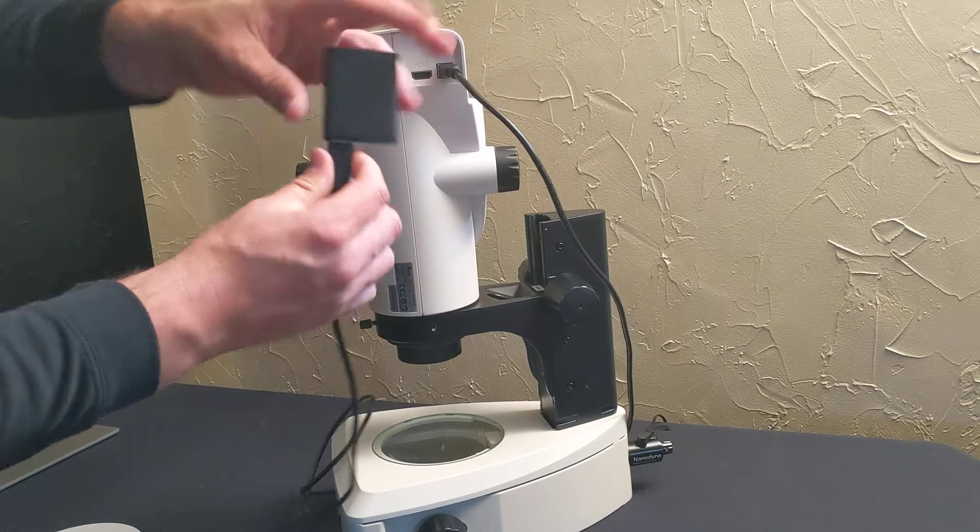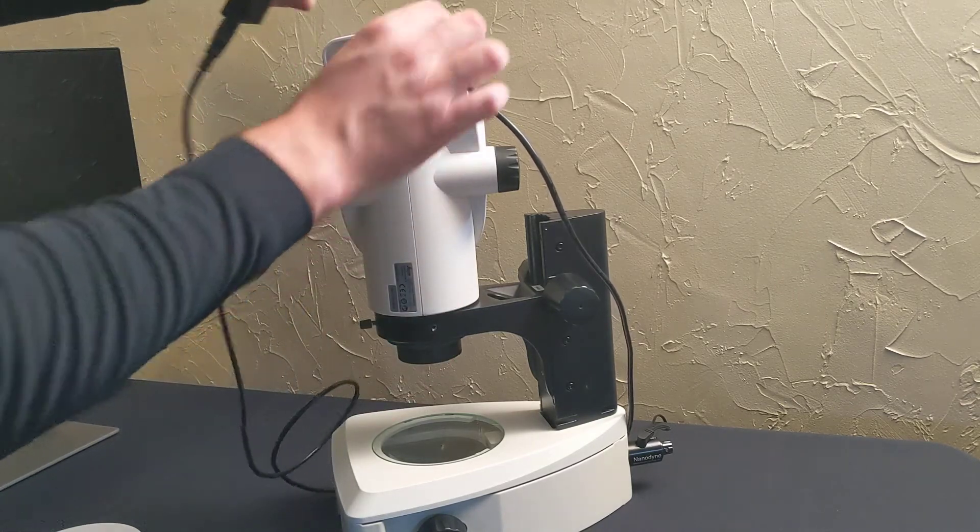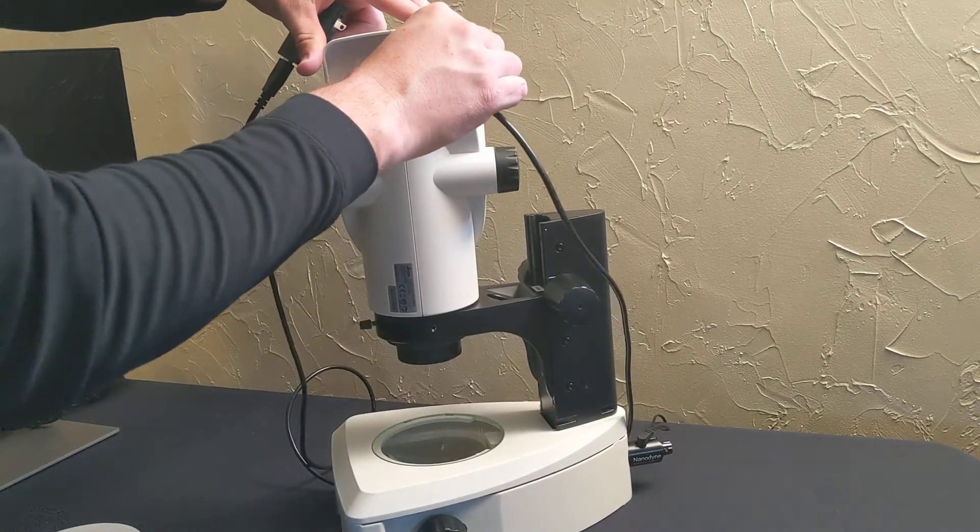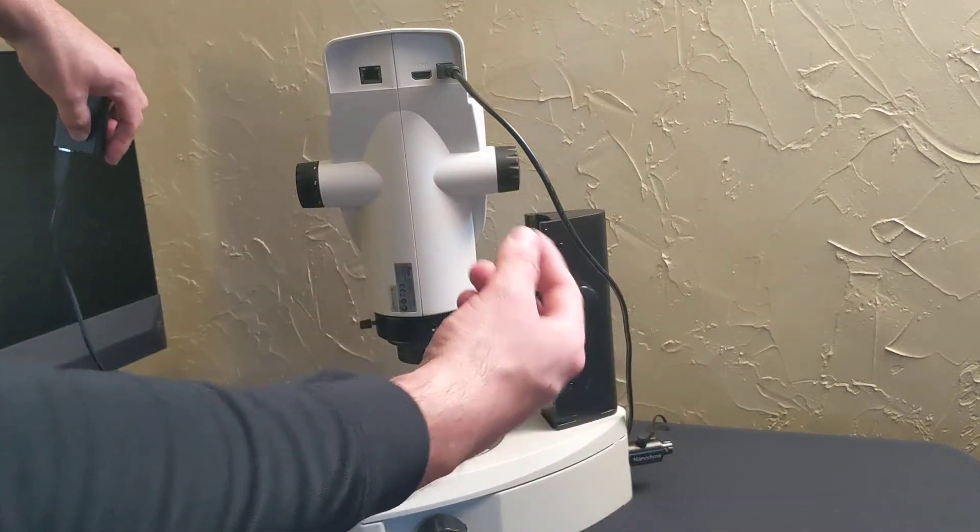either disconnect it from the wall here or out of the socket, or disconnect it right here and that'll power down your microscope. The light that we installed earlier is going to be a separate switch